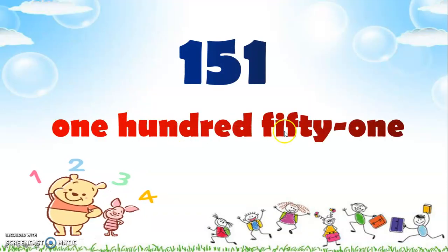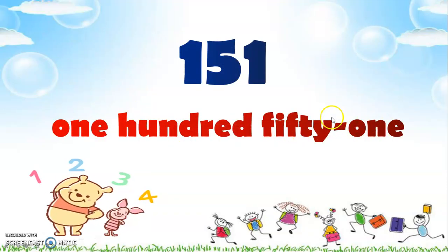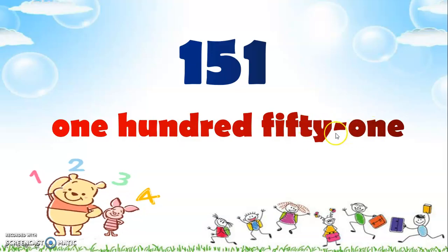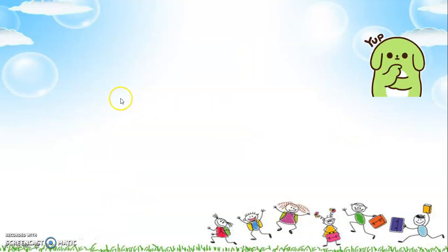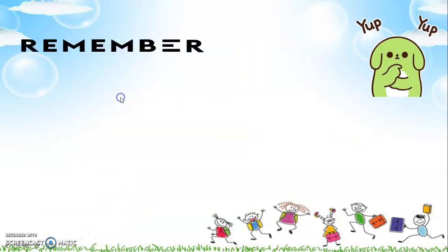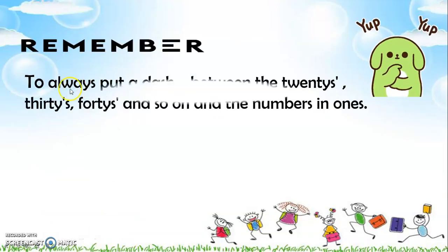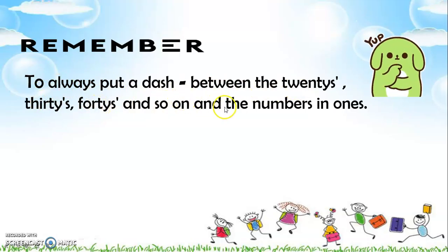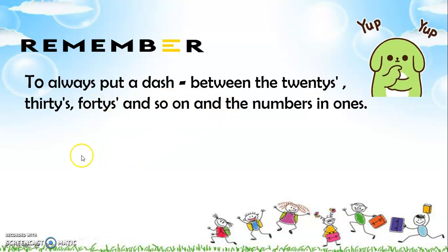One hundred fifty and one — but as you notice, there's a line between fifty and one, and we call it a dash. Remember to always put a dash between the twenties, thirties, forties, and so on, and the numbers in ones.